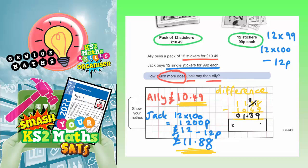And so your answer as to how much more does Jack pay than Ali is £1.39. And it makes sense if you think about it. Ali bought 12 stickers for £10.49. Jack bought 12 stickers for £11.88. And if you find the difference between £11.88 and £10.49, you get this answer, which is £1.39.